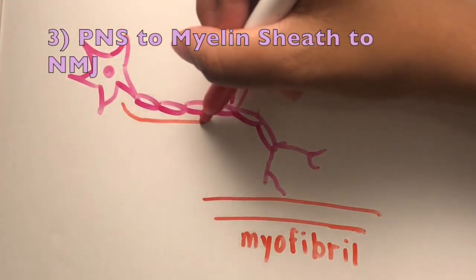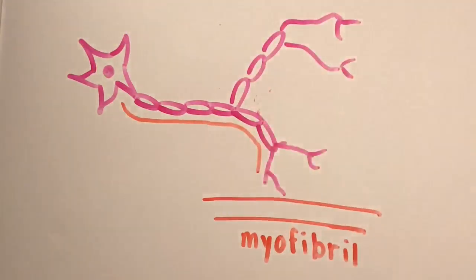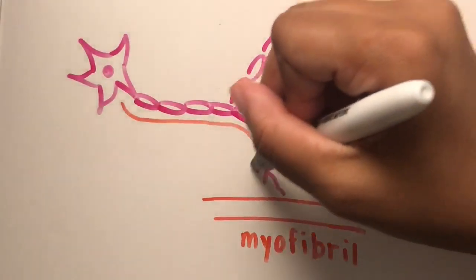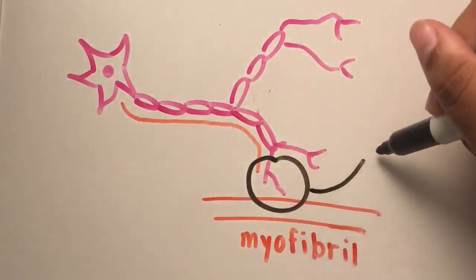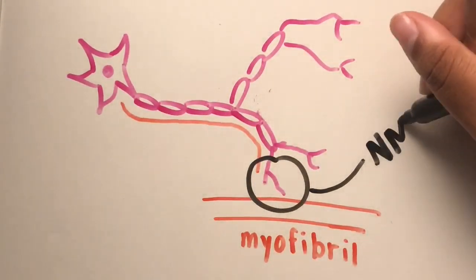The signal continues to travel down the axon branch into the myelin sheath, which look like baby sausages. Then, they go all the way to the axon branches and arrive at the neuromuscular junction.